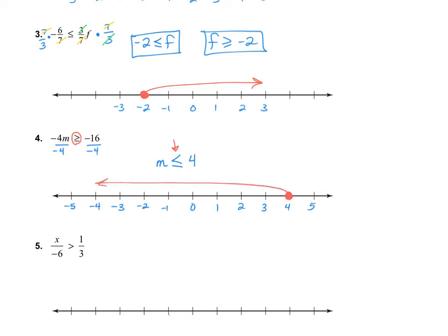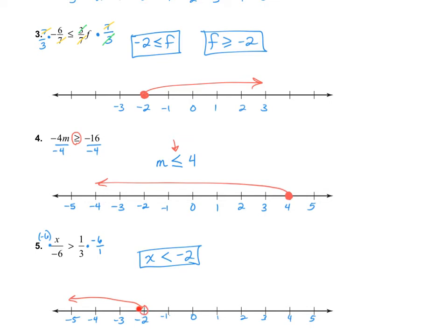Go ahead and do number 5 on your own. I ended up getting x is less than negative 2. I had to flip my sign because x was being divided by a negative 6, so I multiplied by a negative and flipped the sign from greater than to less than. We have an open circle at negative 2, heading down.